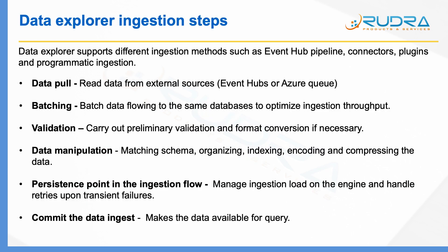In terms of ingesting data into Data Explorer, you generally follow six steps. The first is reading data from external sources, whether it is Azure, queues, or Event Hubs. The second is batching the data — to manage throughput, you can batch data flowing into the same databases to optimize ingestion throughput, so one data source doesn't slow down others. The third is validation, where you carry out preliminary validation and format conversion if required before populating into the database.